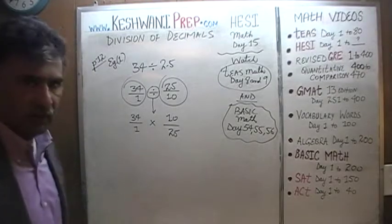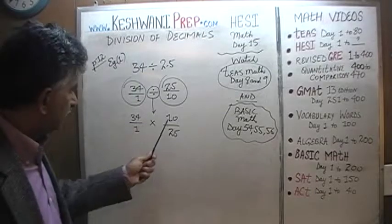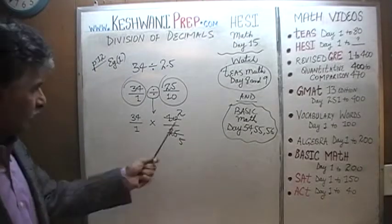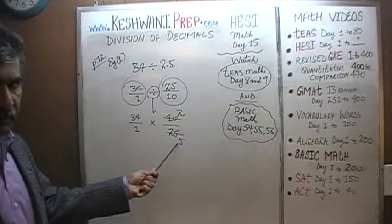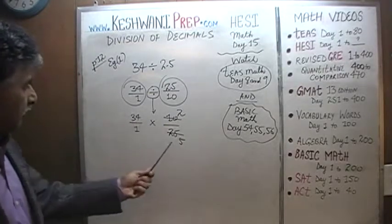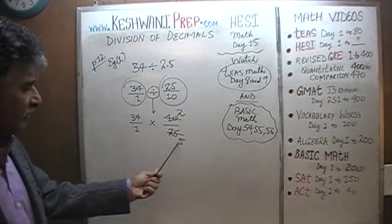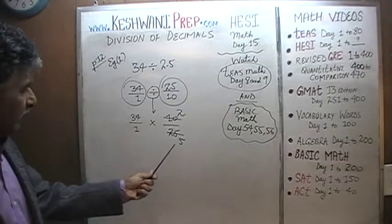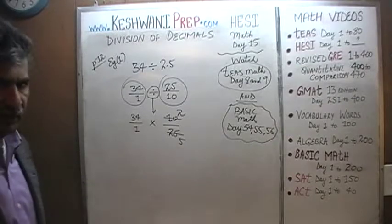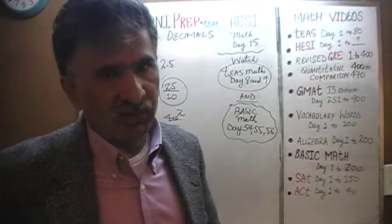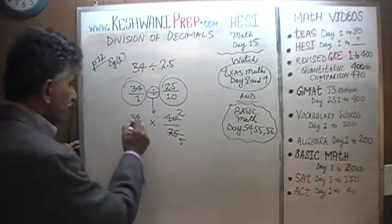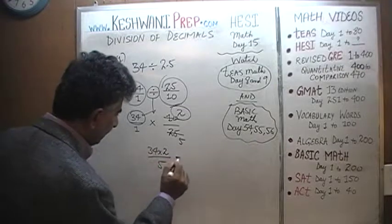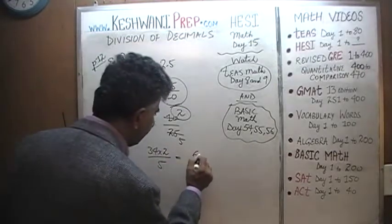We see 10 on the top and 25 on the bottom. They have a common factor of 5. Let's divide top and bottom by 5. If you divide 10 by 5, we get 2. If you divide 25 by 5, we get 5. Now 2 is a prime number, 5 is a prime number, and 34 does not have any factor of 5 — 34 is not a multiple of 5. So that's where the story ends. We multiply 34 by 2 over 5, giving us 68 over 5.